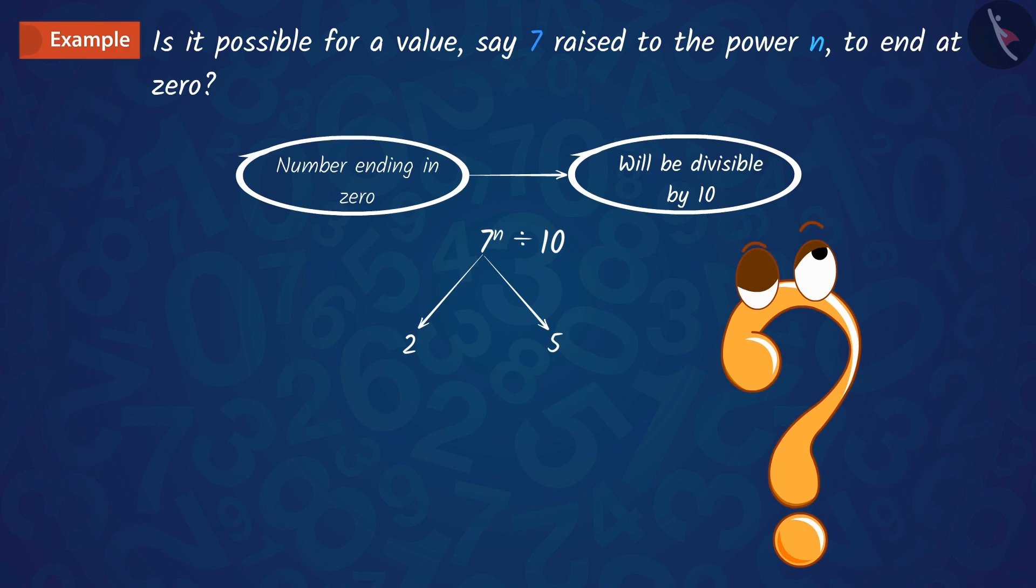Is it possible? No, this is not possible because if we look at the prime factorization of 7, we get only 1 and 7.